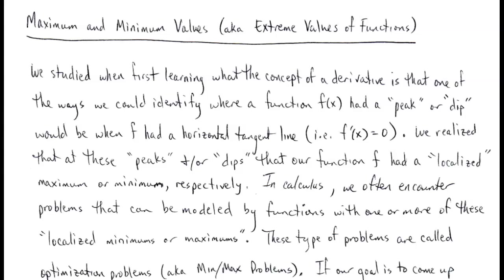The main point of this video will be to describe what we mean when we say local maximum — some people call it relative maximum — local minimum, also known as relative minimum, as well as global max and global min, which some people call absolute max or absolute min. You will see me interchanging the names; local max and relative max mean the same thing, as do global min and absolute min. All those mean the same thing depending on what resource you're looking at.